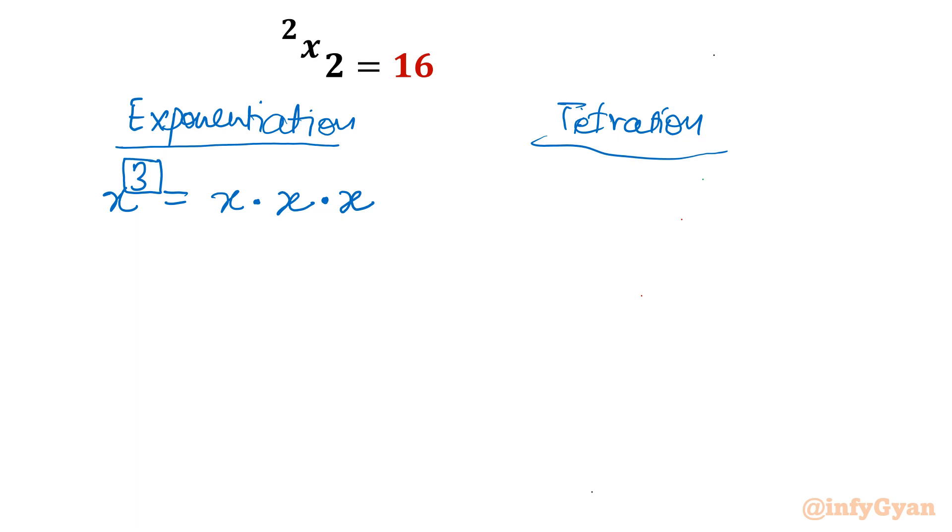Tetration, why it is called repeated exponentiation? Because left hand side we used to write, that is called super power. It is not called power, it is called super power. So x super power 3 is repeated exponentiation. It will be written in this manner only.